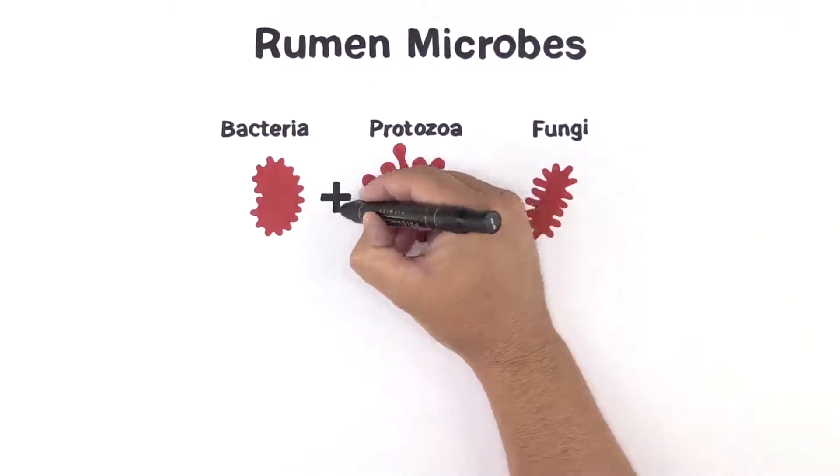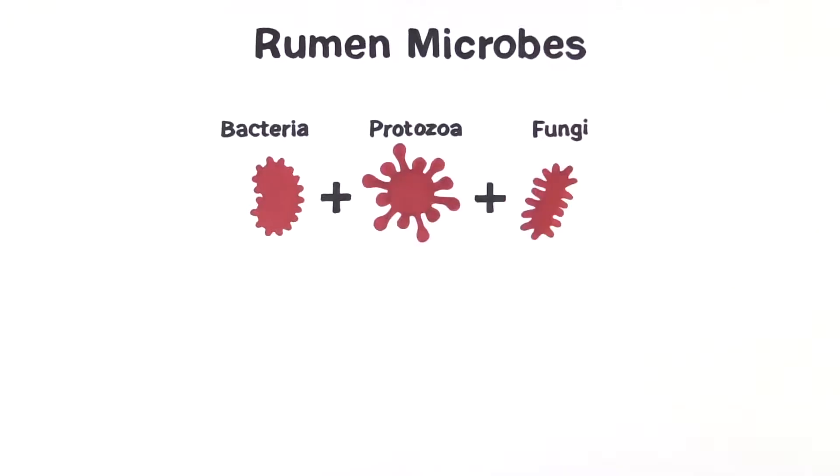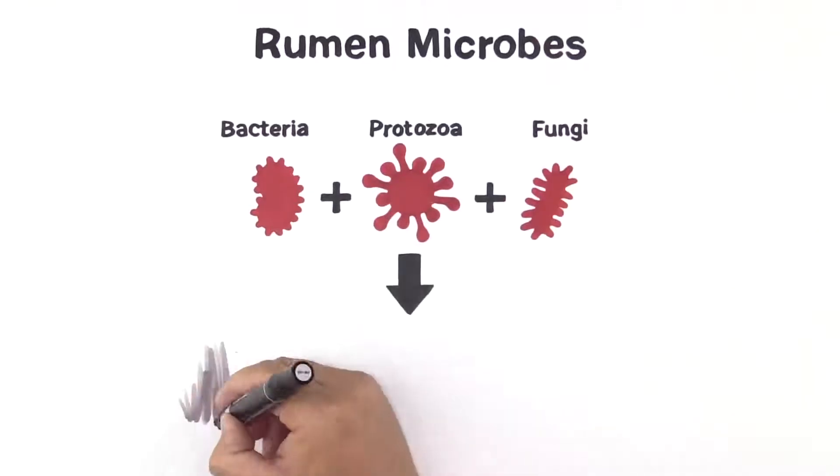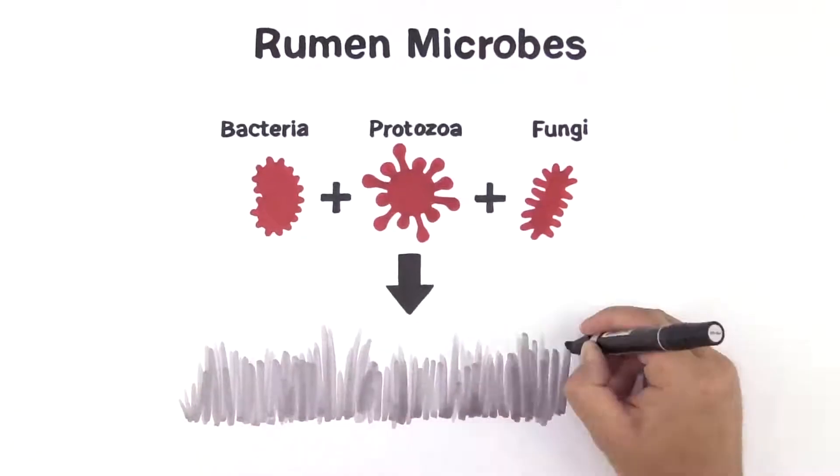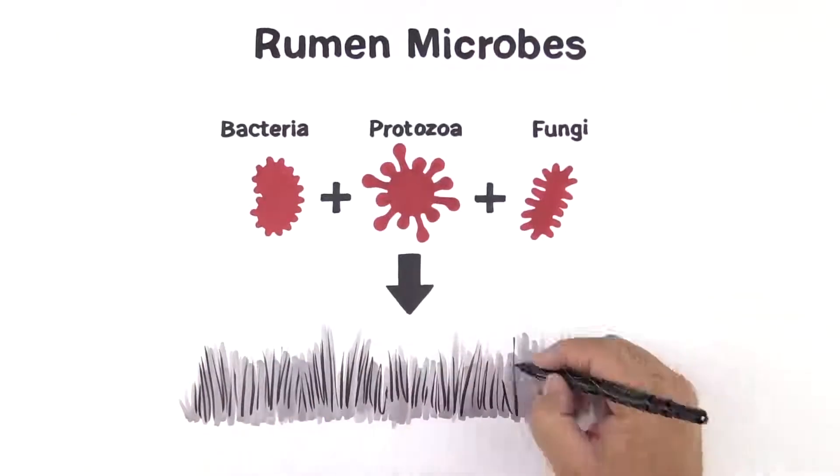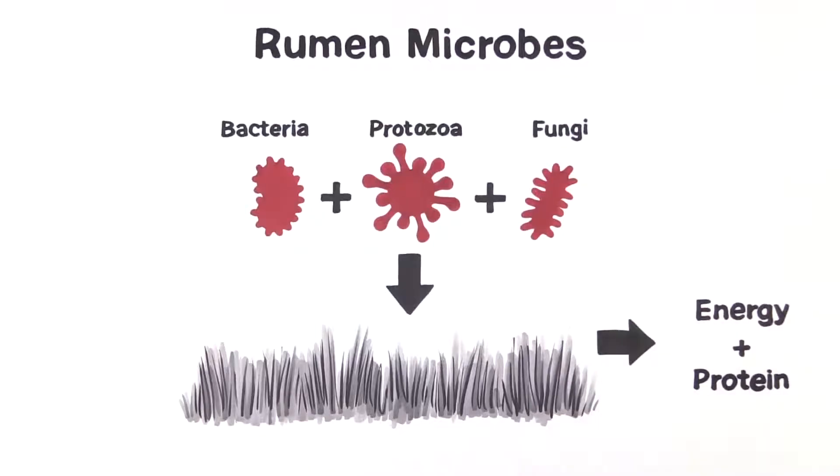It might be hard to digest what these roles actually mean, but it's pretty simple. Cows don't have the enzymes to digest the fiber they eat. So, rumen microbes work together to turn forage into energy and protein that cows can use.